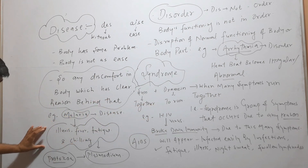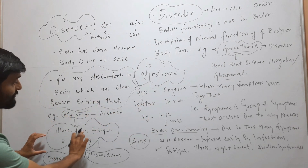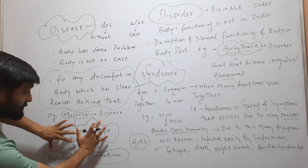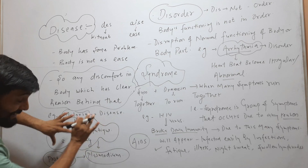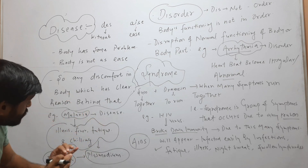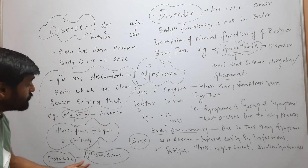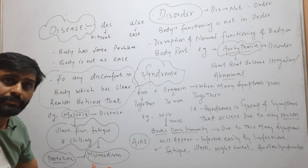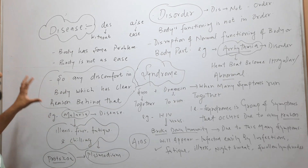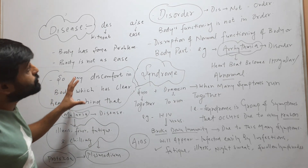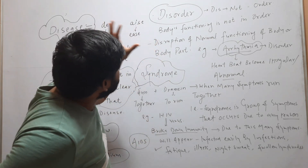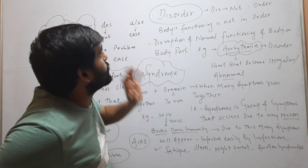The discomforts — illness, fatigue, fever, chilling — are caused by the protozoa Plasmodium. So this is disease: any discomfort in the body which has a clear reason behind it. Now coming to the next one, that is disorder.